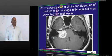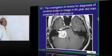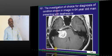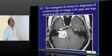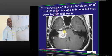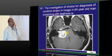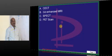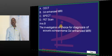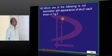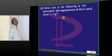What is the investigation of choice for the diagnosis in a 64-year-old presenting with deafness? It is a cerebellopontine tumor, which is generally acoustic neuroma. To diagnose acoustic neuroma, gadolinium-enhanced MRI is considered to be the best investigation.